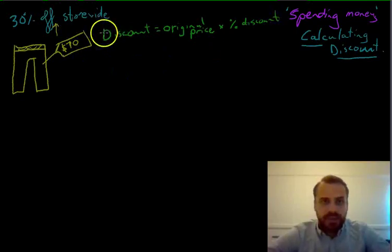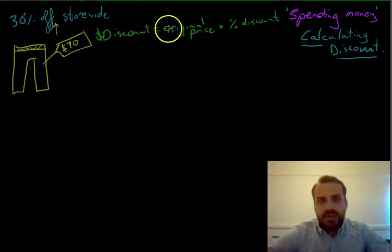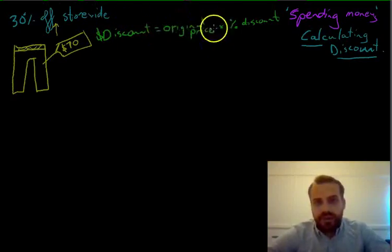Okay, and when we talk about discount, we won't even put a dollar sign there. So what we're saying is the dollar discount, so the discount in dollar terms, is equal to the original price times the percentage discount.